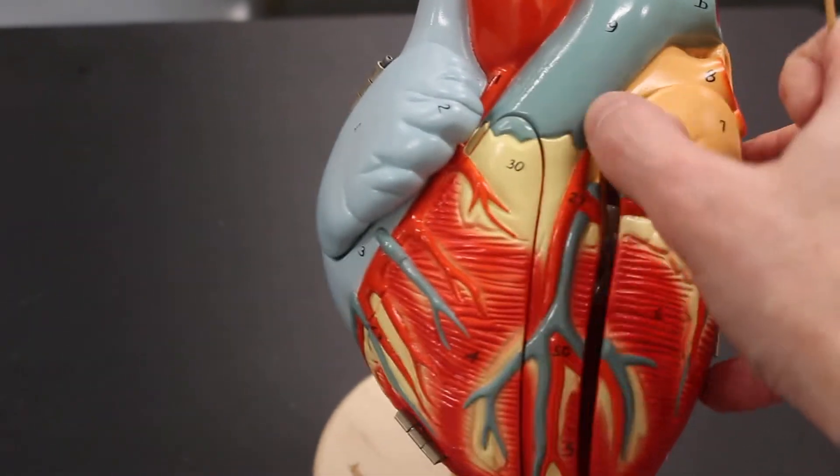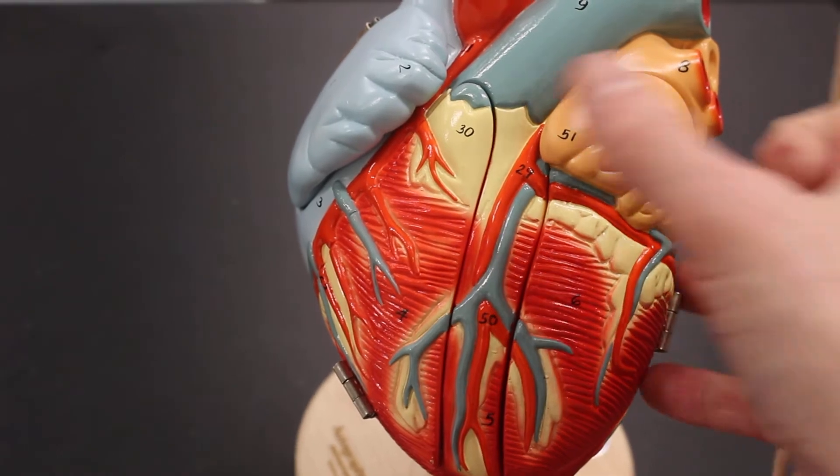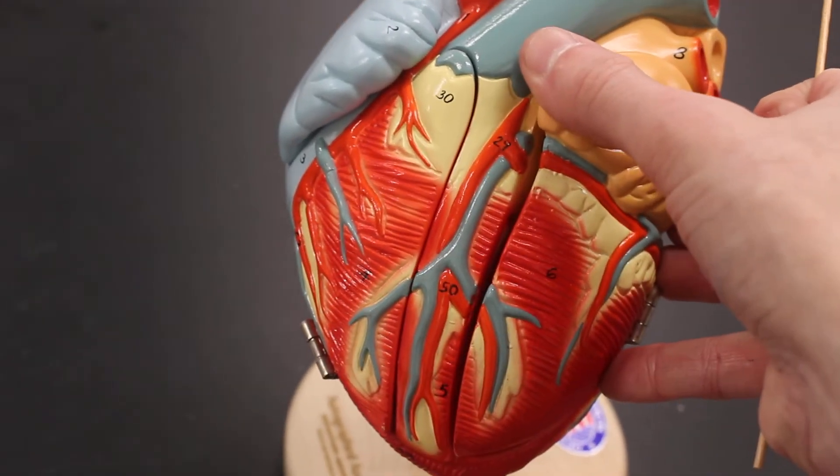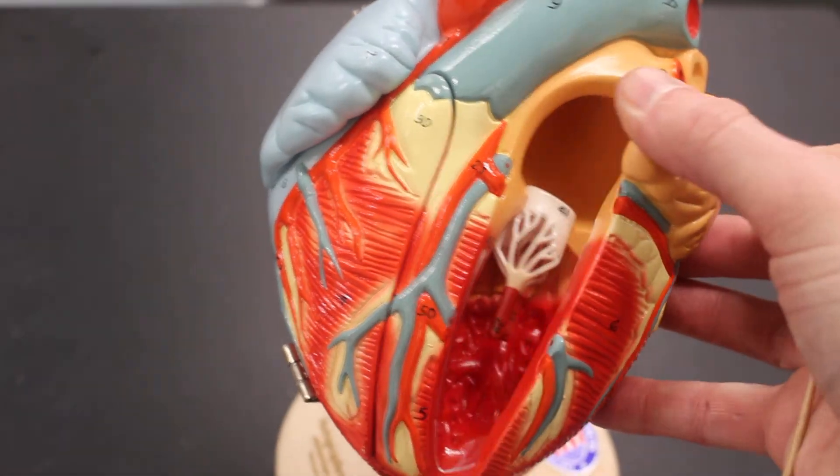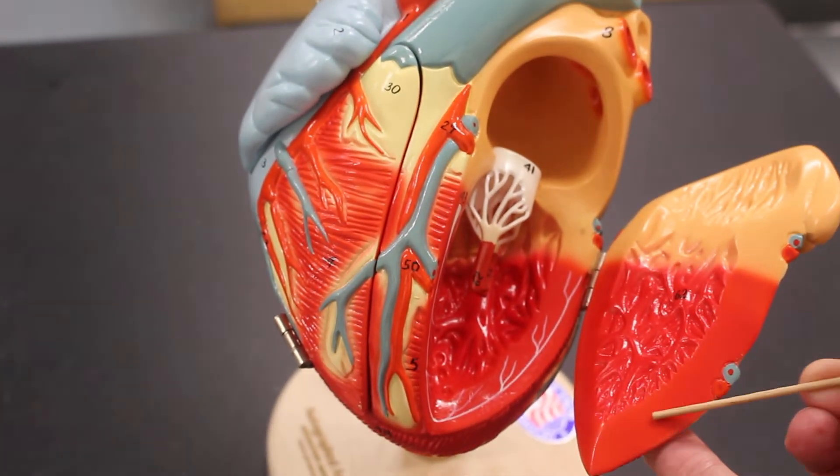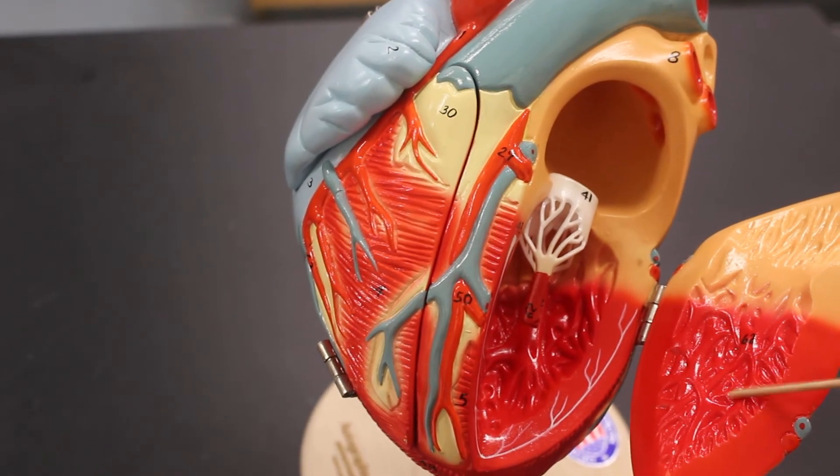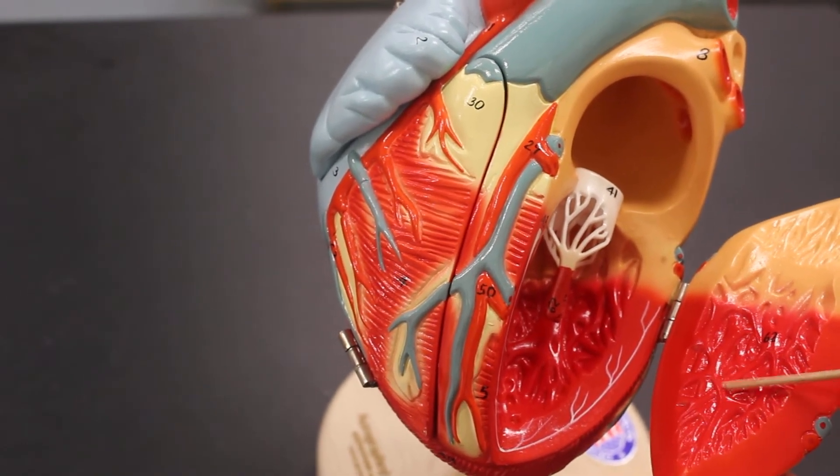If we open it up we can see layers to the heart. The outermost layer is the epicardium. The middle thicker layer here is the myocardium and then the lining on the inside, the innermost layer, is the endocardium.